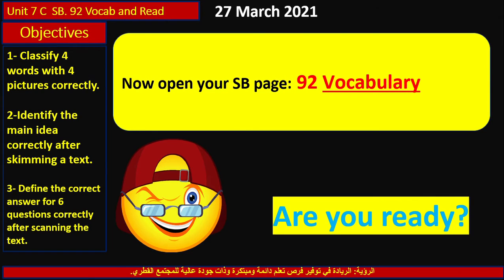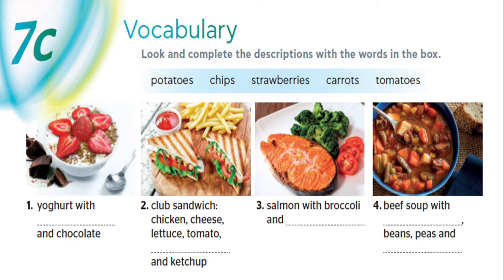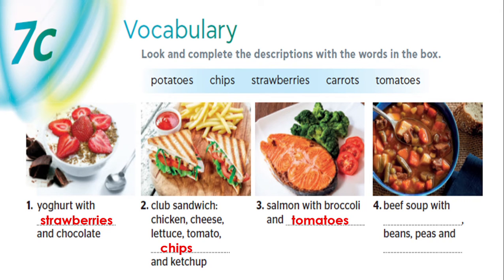Now let's move to our lesson. Open your student book at page 92, vocabulary section. Are you ready? Look at and complete the description with the words in the box. Pause the video now, answer the question, then come back to check your answers. The answers are: yogurt with strawberries and chocolate; club sandwich with chicken, cheese, lettuce, tomato, chips, and ketchup; salmon with broccoli and tomatoes; beef soup with potatoes, peas, and carrot. Excellent — check and correct your answers.